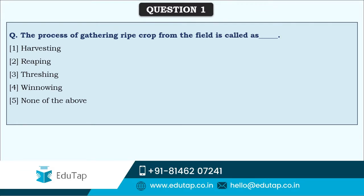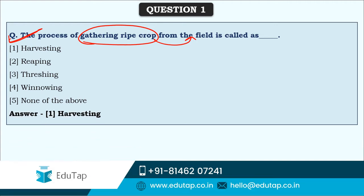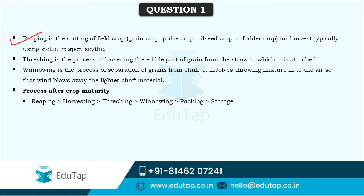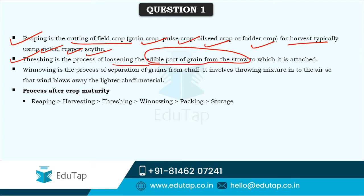Here comes the first question: the process of gathering ripe crop from the field is called as? This is the definition of harvesting. Reaping is the cutting of field crop, be it grain crop, pulse crop, oil seed crop, or fodder crop. Reaping is that cutting of field crop done for harvest, typically using sickle, reaper, saite, etc. Threshing is the process of loosening the edible part of grain from the straw to which it is attached.